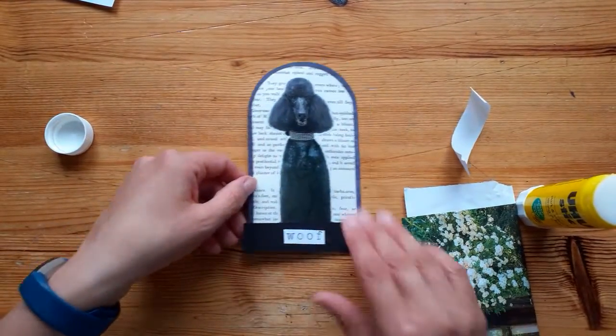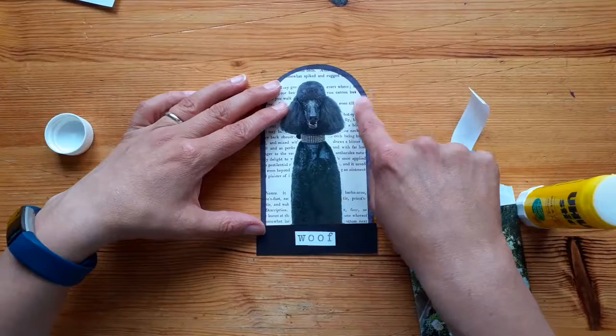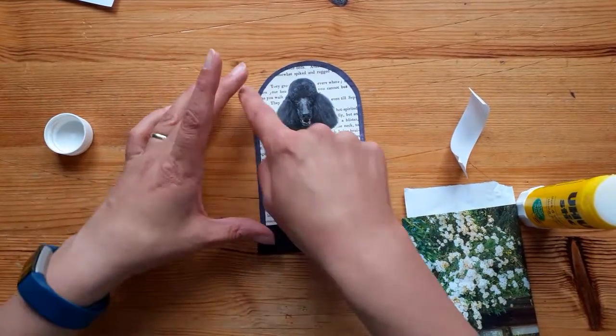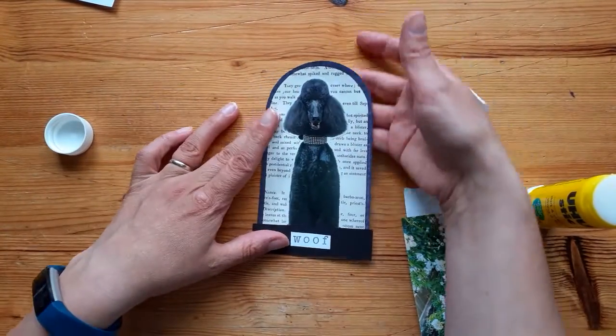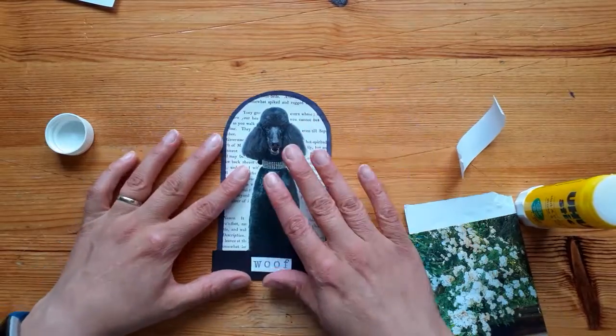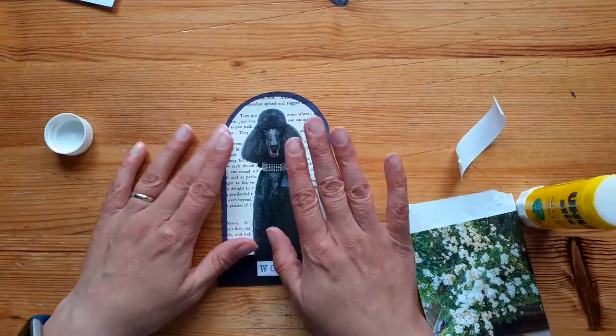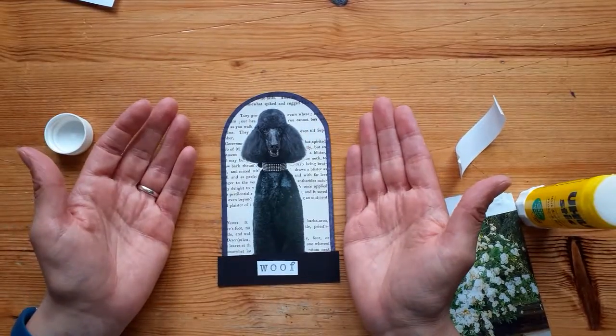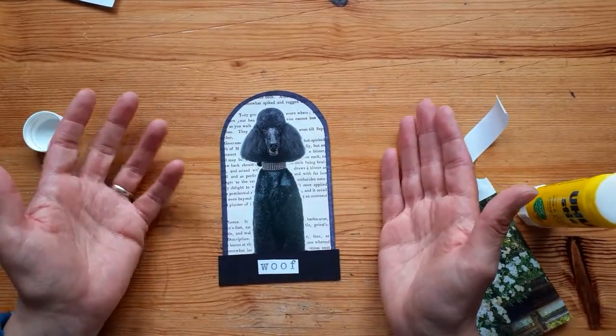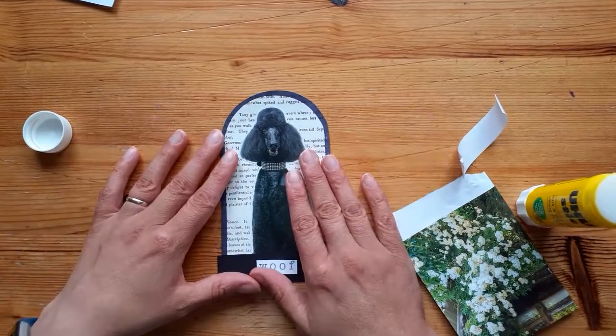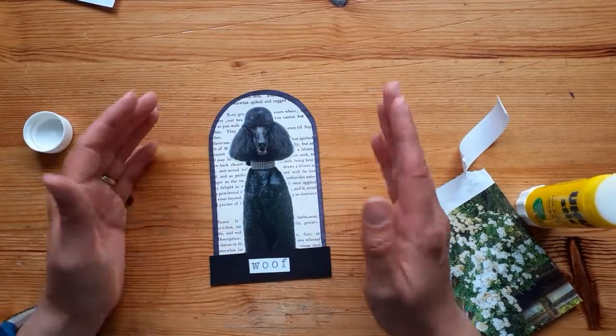Or you could have this as a tuck in, you could even glue along there or along there and have it as a tuck spot for something else. And it's just a lovely unusual shape and just something fun to do with all those extra scraps that we accrue. So I hope if you found this useful if you do have a go I would love to see what you decide to put in your bell jar.